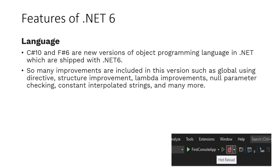Some other features relate to the language. C# 10 and F# 6 are new versions of the object programming languages in .NET which are shipped with .NET 6. Many improvements are included in this version, such as global using directives, structure improvements, lambda improvements, null parameter checking, constant interpolated strings, and many more.